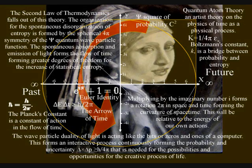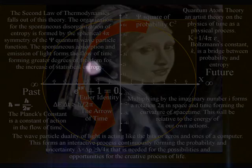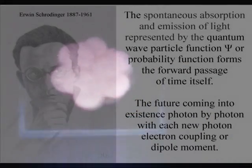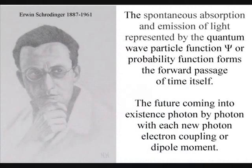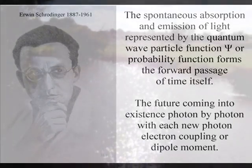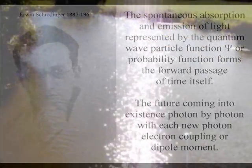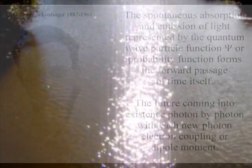This theory is based on just two simple postulates. The first postulate is that the spontaneous absorption and emission of light represented by the quantum wave particle function or probability function of quantum mechanics forms the forward passage of time itself, with the future coming into existence photon by photon with each new photon-electron coupling or dipole moment.